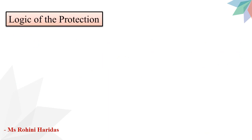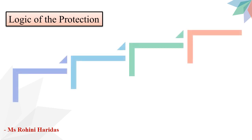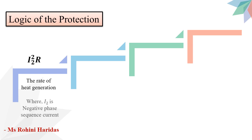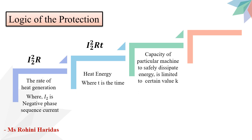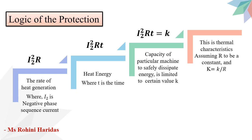Now let us discuss the logic of protection against unbalanced loading. We know that the rate of heat generation is proportional to I₂²R, where I₂ is the negative phase sequence current. We also know that the heat energy is proportional to I₂²RT, where T is the time. The capacity of a particular machine to safely dissipate the energy is limited to a certain value, let it be small k. Therefore, we can write I₂²RT = k. Assuming R to be a constant and capital K = k/R, we get I₂²T = K.